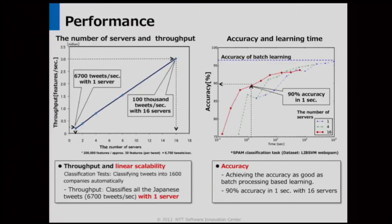The right figure shows the running time and accuracy. Ubatas updates its model when data arrives, and it achieved 90% accuracy in one second with 16 servers.